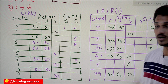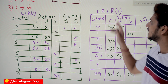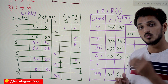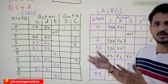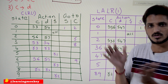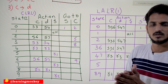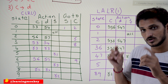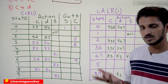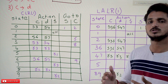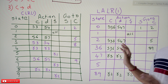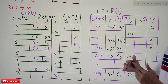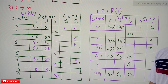One important point to understand: the number of states in the LALR(1) parsing table is always less than or equal to the number of states in the CLR(1) parsing table. It is not compulsory that states will always be reduced — sometimes they may reduce, sometimes they may not. If possible, states are merged. So LALR(1) will have either fewer or the same number of states compared to CLR(1).